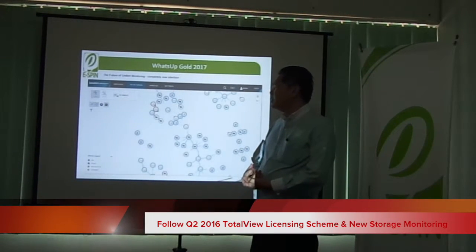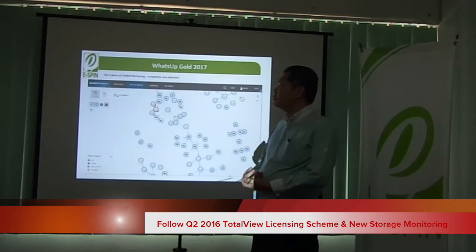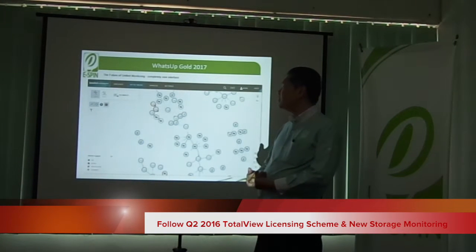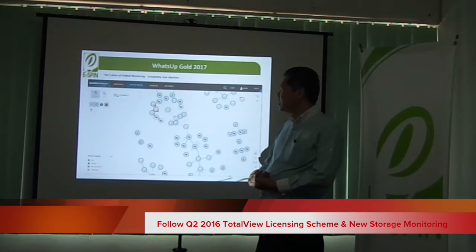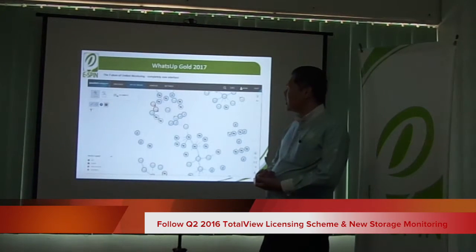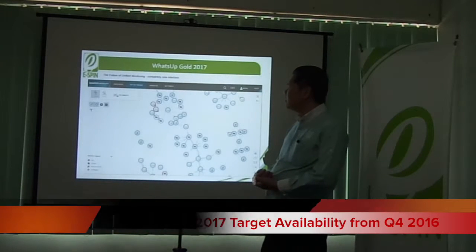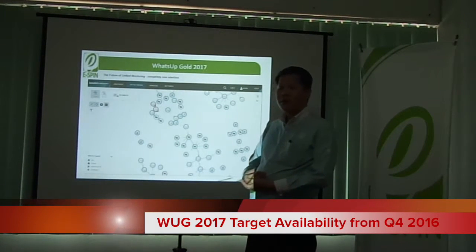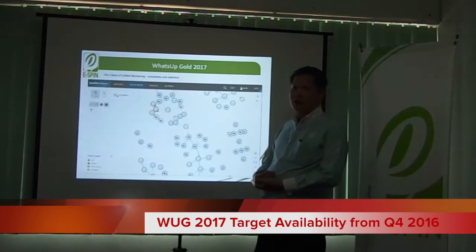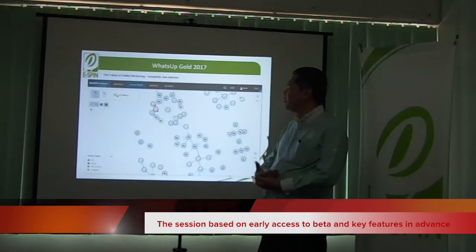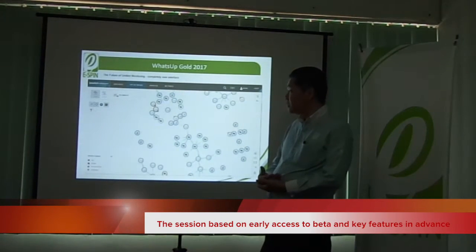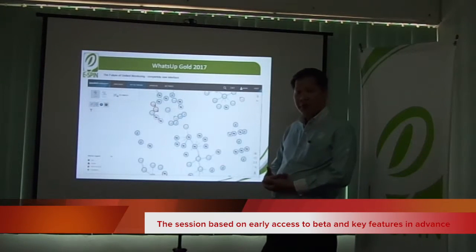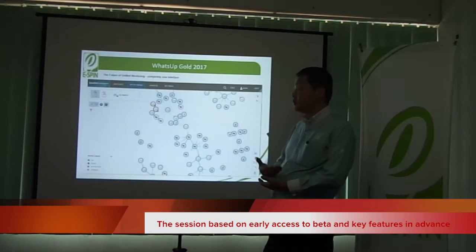From the licensing auto setting, it is in Q2, early Q2 of 2016. It was introduced to WhatSupGo 2016 when it brought the total view licensing screen, and at the same time for the Spanish Monitor. Now this version, WhatSupGo 2017, is targeted to be launched in Q4 2016. What we are based on here is early access to the beta versions, giving us a chance to go through all the key features and unit points that we will share with you in these sections.